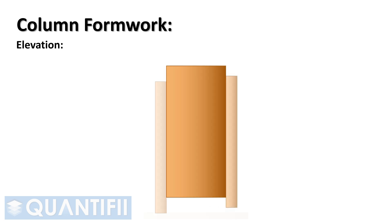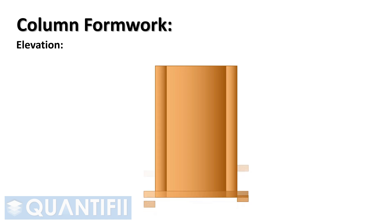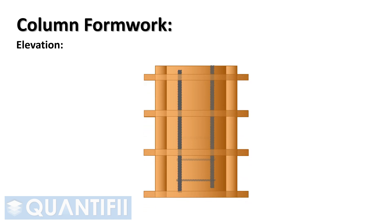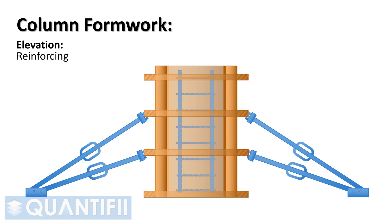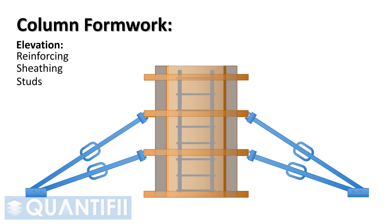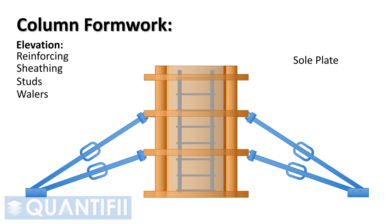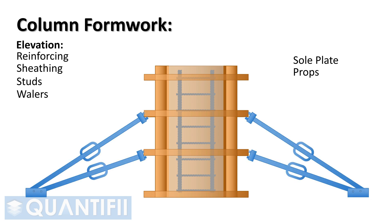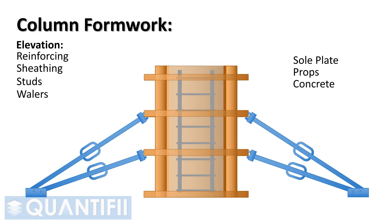The elevation shows a few additional components in the column formwork. Firstly, the reinforcing will be fixed in place. Next, we need to build up the sheathing, studs, whalers, and the soleplate. Once the formwork has been made up and erected in place, we can fix the push-pull props, then pour the concrete into the form.